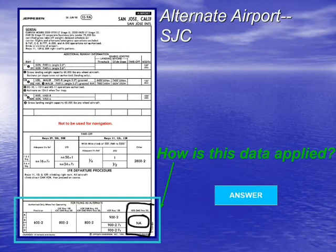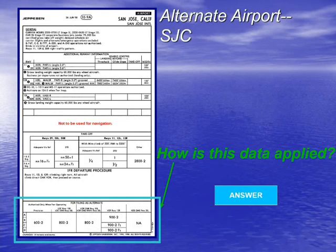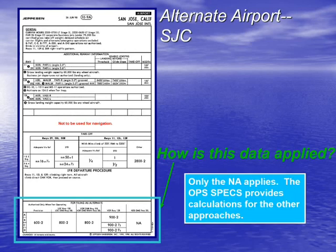If the whole airport has nothing except N/A on this 10-9-A page, then this whole airport may not be used when figuring out alternate minimums for an air carrier. However, there are not a lot of airports like that — it's just something to notice. The next few slides will show exactly how we do this.